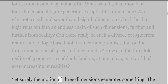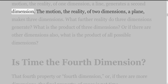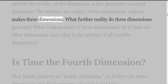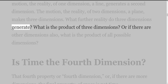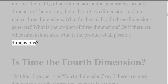Yet surely the motion of three dimensions generates something. The motion, the reality of one dimension, a line, generates a second dimension. The motion, the reality of two dimensions, a plane, makes three dimensions. What further reality do three dimensions generate? What is the product of three dimensions? Or if there are other dimensions also, what is the product of all possible dimensions?